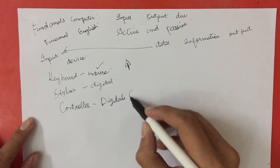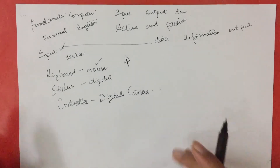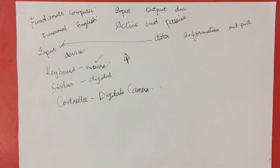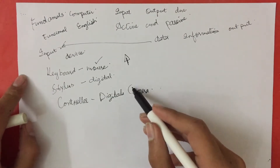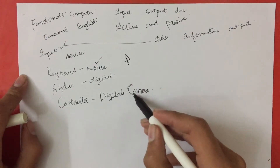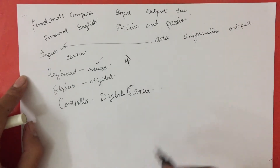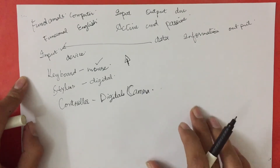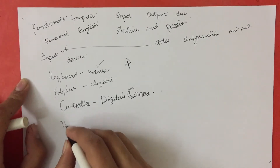Next we have digital cameras. How is a digital camera an input device? It is an input because when you capture a picture, the data is inputted into the digital camera, which is then converted into a real picture through a printer. We'll study the printer a little later.